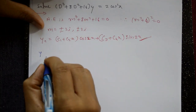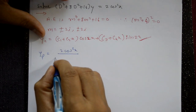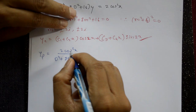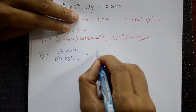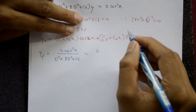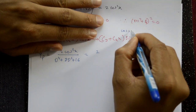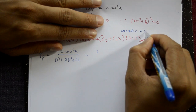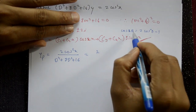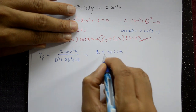Now the particular integral: yp = 2cos²x / (D⁴ + 8D² + 16). Using the identity 2cos²x = 1 + cos2x, separate into P1 = 1/(D⁴ + 8D² + 16) and P2 = cos2x/(D⁴ + 8D² + 16).